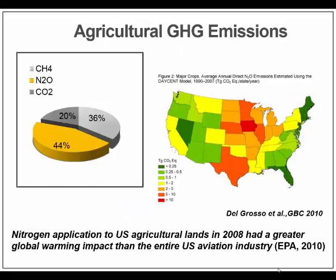With greenhouse gas emissions, agriculture is a significant player. A lot of that greenhouse gas emission related to agriculture is due to nitrous oxide, and that comes from nitrogen fertilizer applications to corn. On the map on the right, red indicates relatively higher greenhouse gas emissions. The Midwest, as you might expect, is very high, but New York State is significant, although not as high.